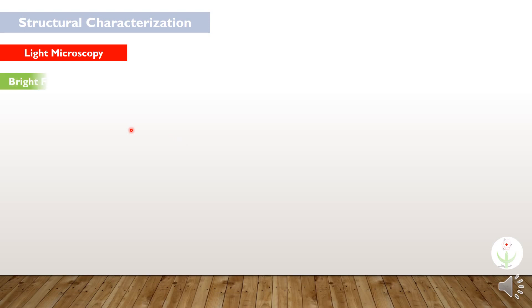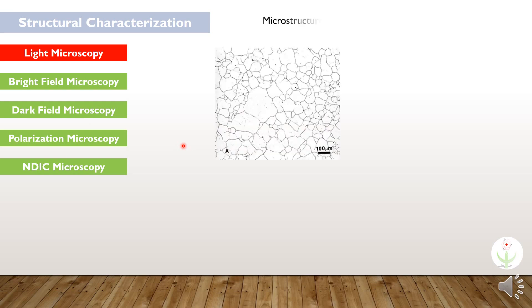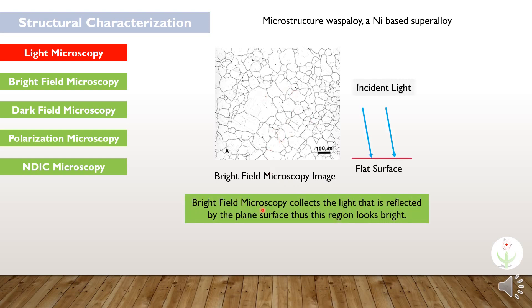Most commonly, these light microscopy techniques are used for the analysis of metal microstructure. See, this is the microstructure of a Waspaloy, which is a nickel-based superalloy. This image is taken from bright field microscopy. In this microscopy, we collect the light that is reflected by the plane surface.